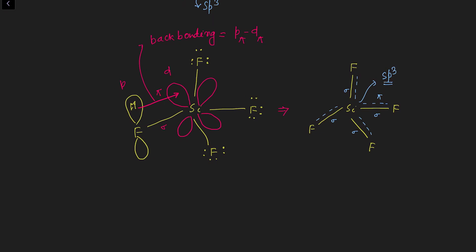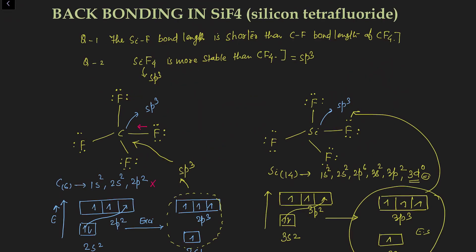Because of the pi bond formation, stability increases and bond length decreases. Comparing SiF₄ and CF₄: in SiF₄, back bonding between silicon and fluorine creates partial double bond character, making the Si-F bond length shorter than C-F. In CF₄, carbon has no empty d orbital, so fluorine cannot donate, there is no back bonding, and the C-F bond length is larger than Si-F.